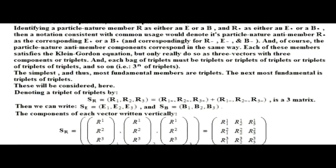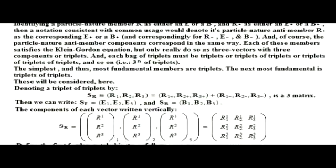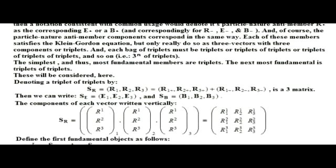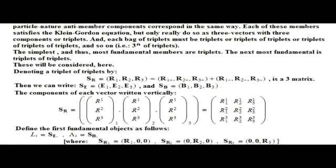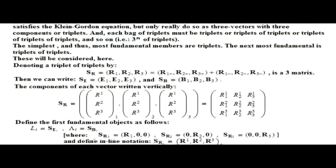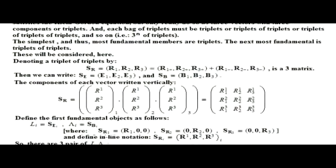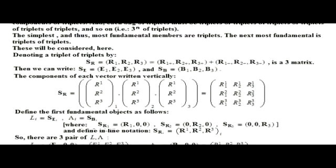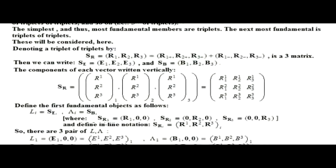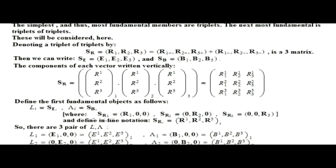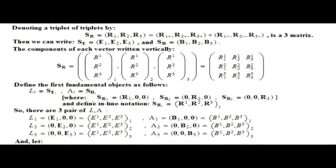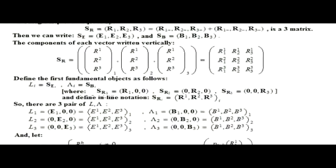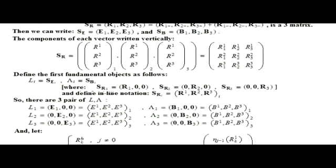Denoting a triplet of triplets by S sub bar as the trinomial R sub 1, R sub 2, R sub 3 equals R sub 1 plus, R sub 2 plus, R sub 3 plus, plus R sub 1 minus, R sub 2 minus, R sub 3 minus, is a 3 by 3 matrix. Then we can write S sub B as E sub 1 minus, and S sub B as B sub 1, B sub 2, B sub 3. The components of each vector are written vertically as the S sub bar matrices you see here.